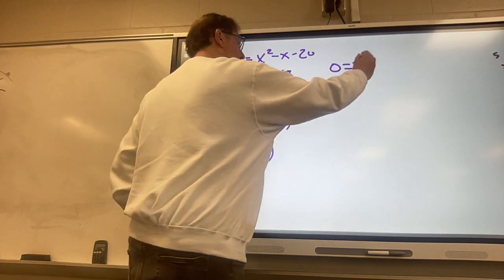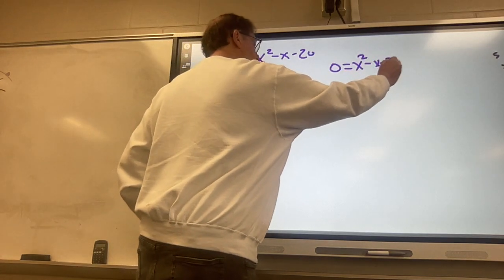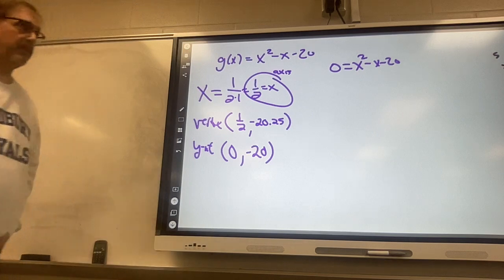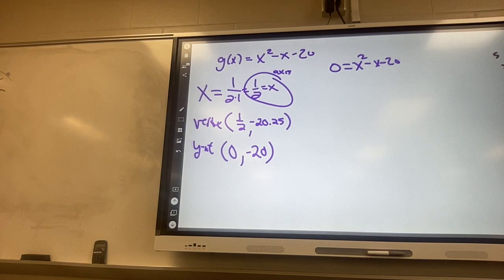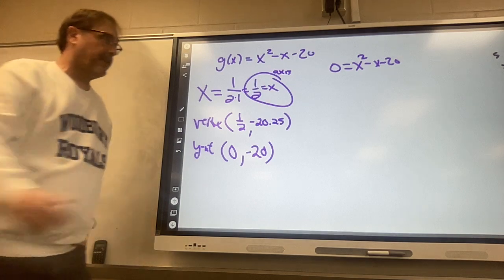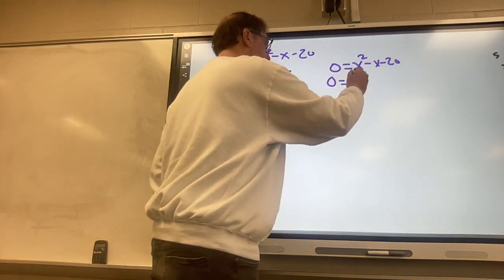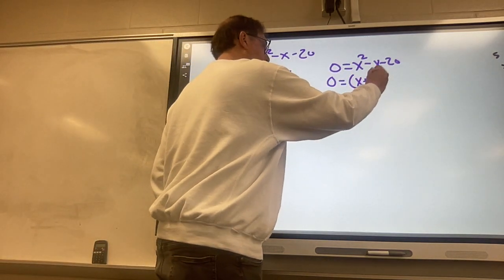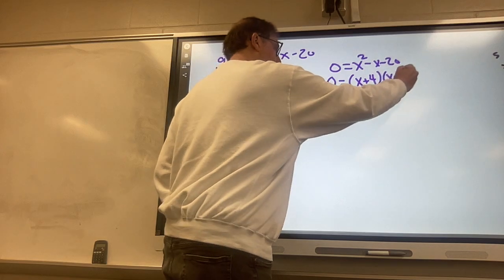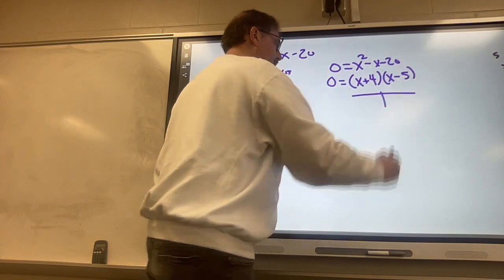Now we're going to set that equal to 0 and factor it, and then do the big T with that. Do the big T: multiplies to be negative 20, adds to be negative 1. What could that possibly be?